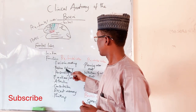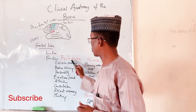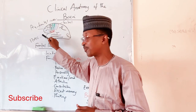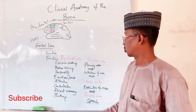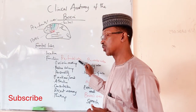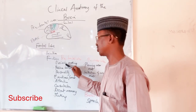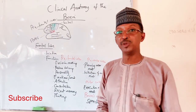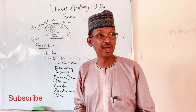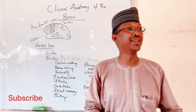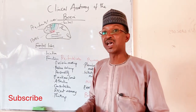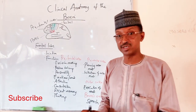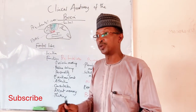The prefrontal cortex is responsible for decision making. For example, deciding to become a medical doctor or an engineer, or deciding when to marry — these are all decisions governed by the prefrontal cortex.